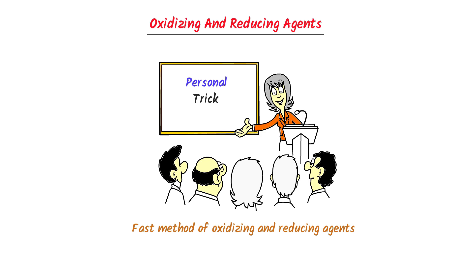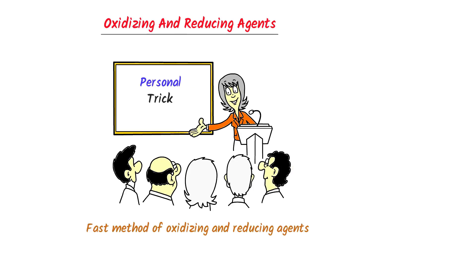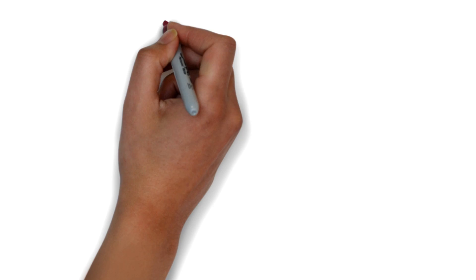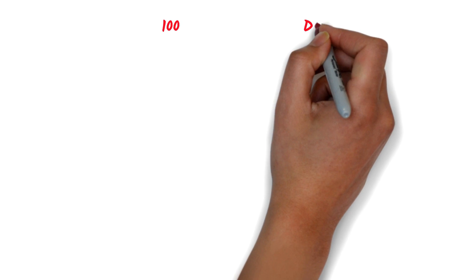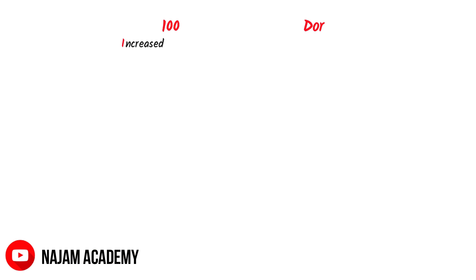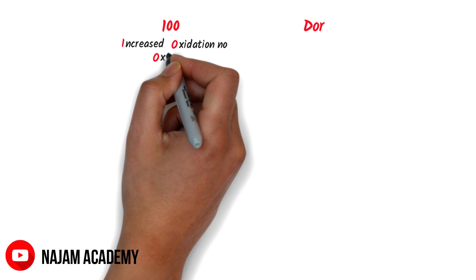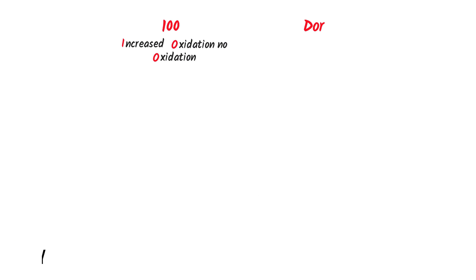To learn it, we have to quickly learn oxidation and reduction. In the previous video, we already learned that oxidation is OIL and reduction is RIG. Here, OIL stands for increased oxidation number is oxidation, and RIG stands for decreased oxidation number is reduction.